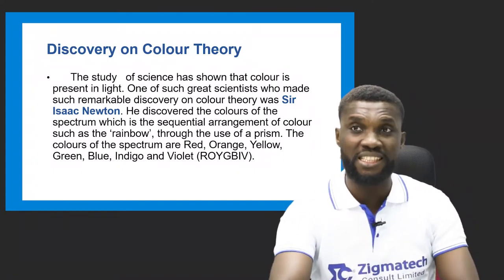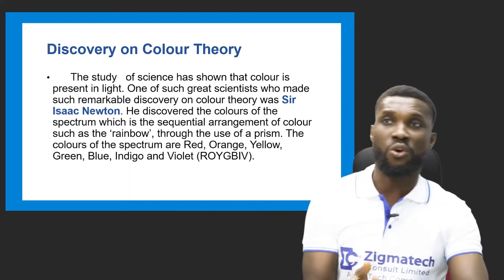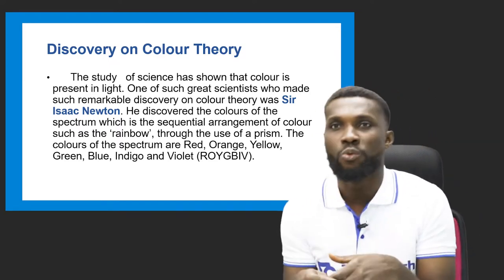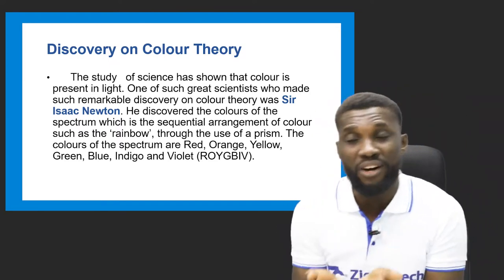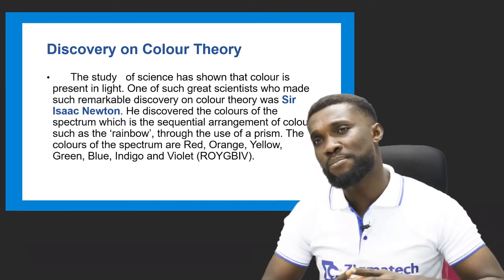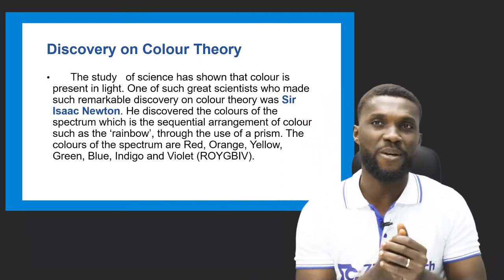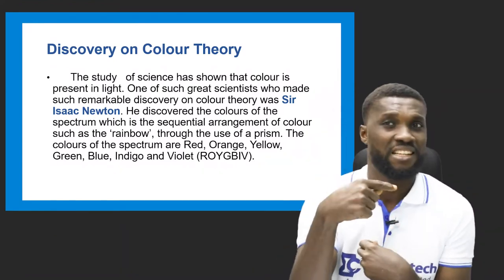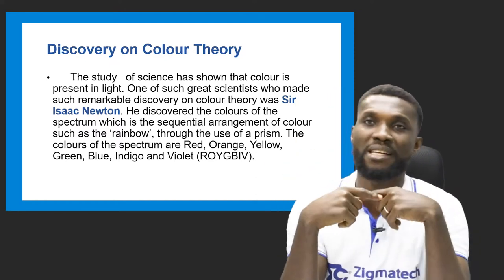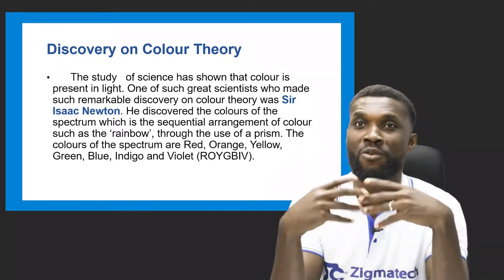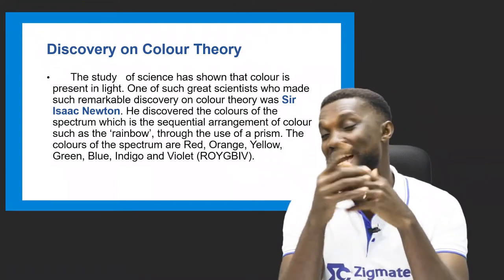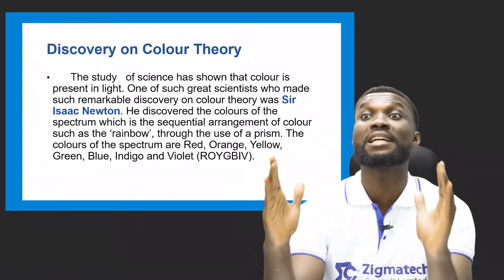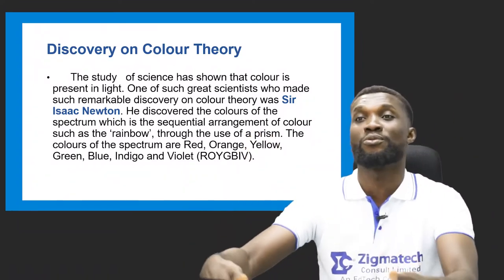He allowed white light to pass through the glass prism, and it produced the seven colors of the rainbow in the spectrum. In the spectrum, we saw colors like red, yellow, blue, green, indigo, and violet — the seven colors of the rainbow seen by Isaac Newton. I still believe there are colors we have not yet seen, but here on earth we have just seven colors.